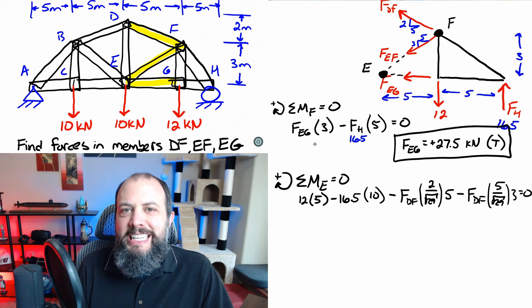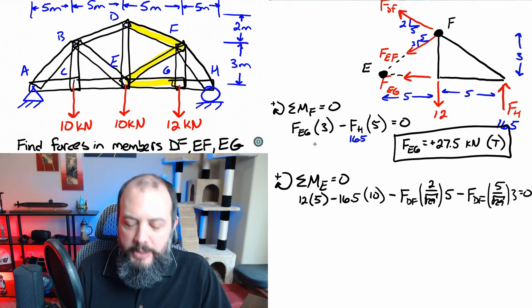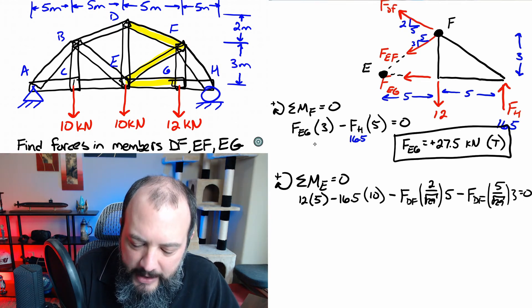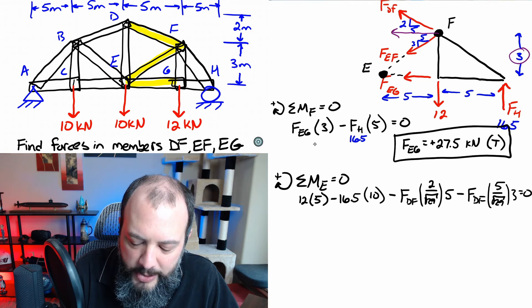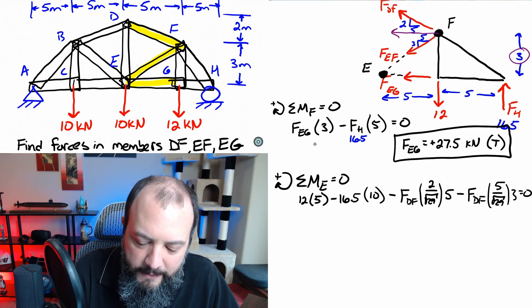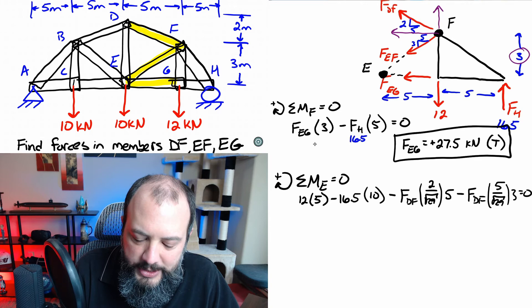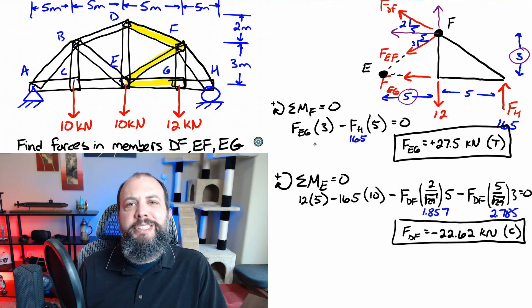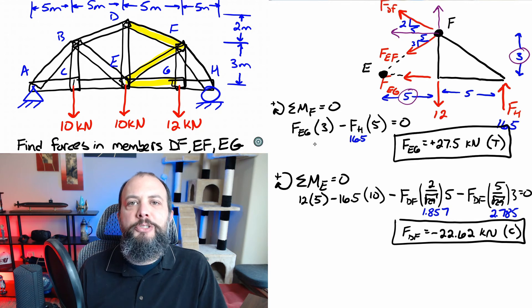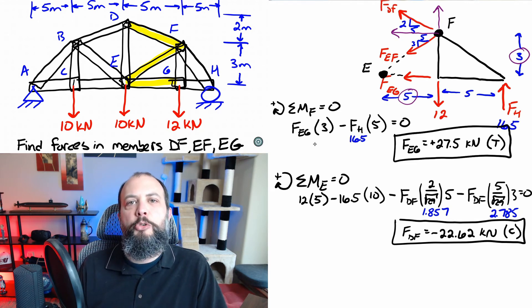So this moment equation isn't easy but it is probably easier than doing simultaneous equations. So what I've done is I've split FDF into its x direction component which then uses the vertical dimension three and then also F into a vertical component which uses this horizontal distance five. It's a little bit of calculator work because of the signs but you get to an answer of negative 22.62 which I've labeled with a C meaning compression.